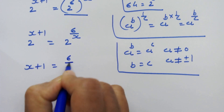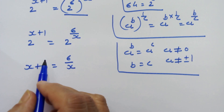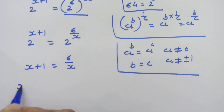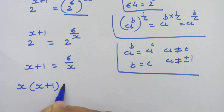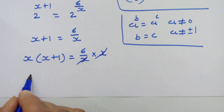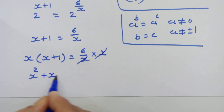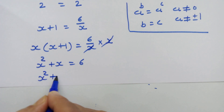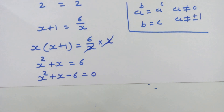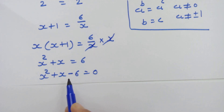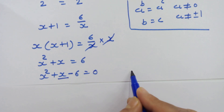If we have a raised to b is equal to a raised to c, and when a is not equal to 0 and a is not equal to plus or minus 1, then we can equate the exponents: b is equal to c. Using this rule, we can write x plus 1 is equal to 6 upon x. It seems we will have a quadratic equation here. Let's multiply both sides by x, so x into x plus 1 is equal to 6. Opening the bracket, we have x squared plus x is equal to 6, so x squared plus x minus 6 is equal to 0.